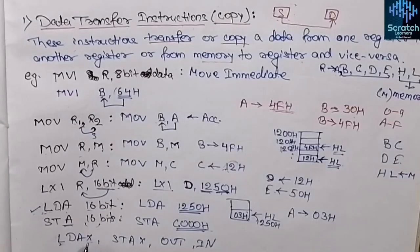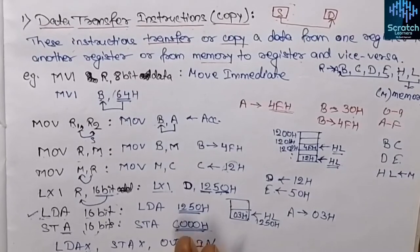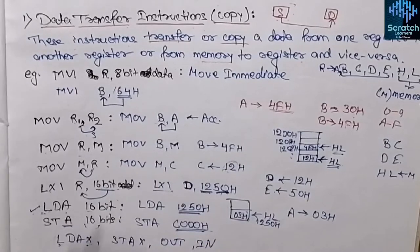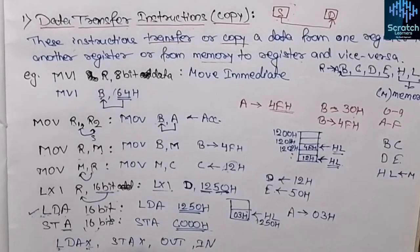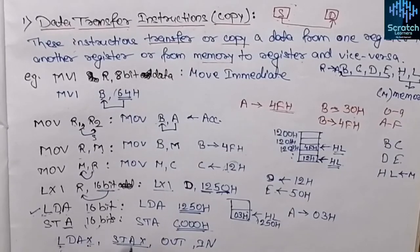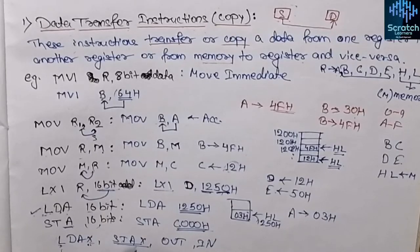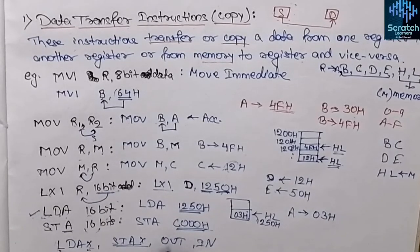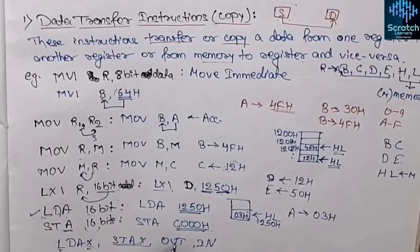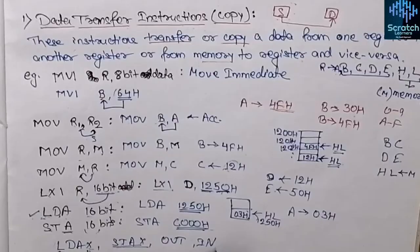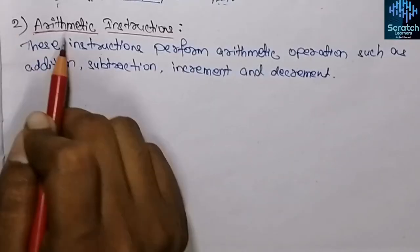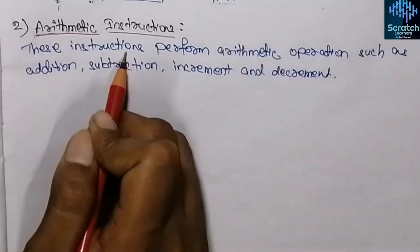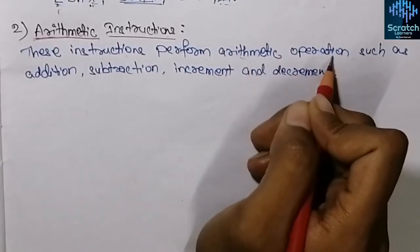There are also other data transfer instructions: LDAX loads 8-bit data into the accumulator from memory, STAX stores a 16-bit data into memory, the OUT instruction sends a data byte from the accumulator to an output device, and the IN instruction receives data and places it into the accumulator.